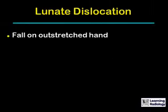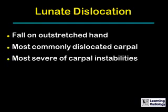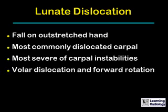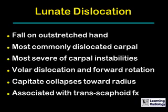Lunate dislocations occur because of falls on the outstretched hand. They are the most commonly dislocated carpal bone, and they represent the most severe form of carpal instability. There is almost always volar dislocation and forward rotation of the lunate. The capitate will frequently collapse toward the radius, and they are frequently associated with fractures across the scaphoid.